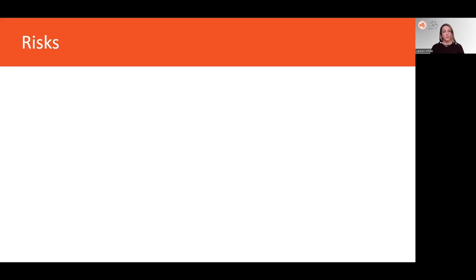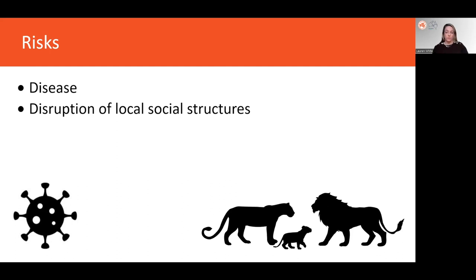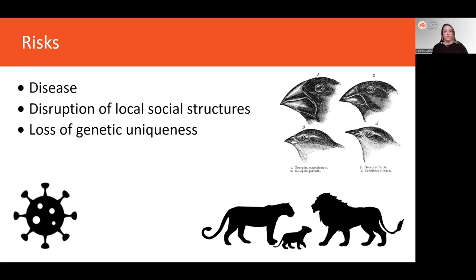So restoring gene flow is clearly a valuable conservation strategy. However, it's not without risks, which should be carefully assessed during planning of any projects aiming to restore gene flow. For example, if individuals from one population carry pathogens to which the recipient population has little or no immunity, this can result in disease outbreaks and population declines. Secondly, moving individuals from one group to another may disrupt local social structures and negatively impact either the source or the recipient population. Introducing individuals from outside a population may dilute or overwhelm unique genetic characteristics of the recipient population.